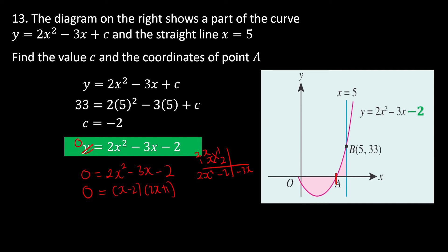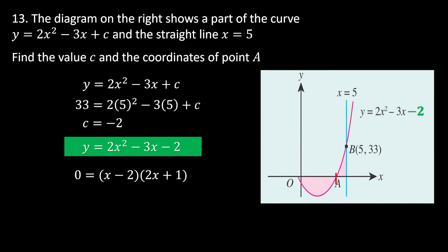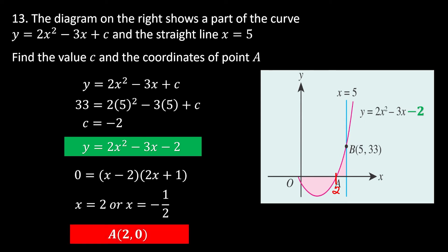Since point A has a positive x-coordinate, x = 2, so point A is (2, 0). The other root x = -1/2 is noted. We are done finding c and point A.